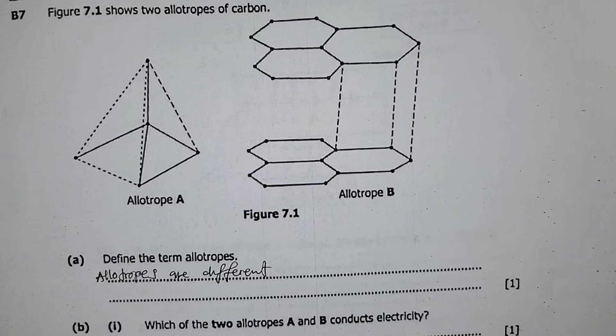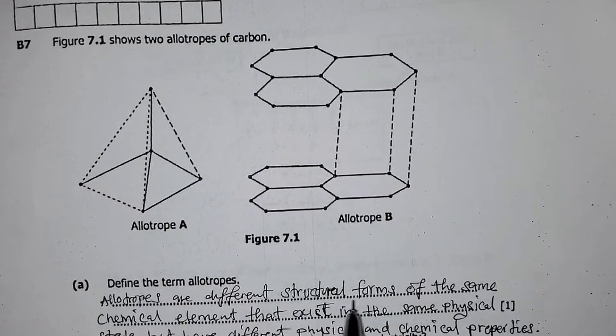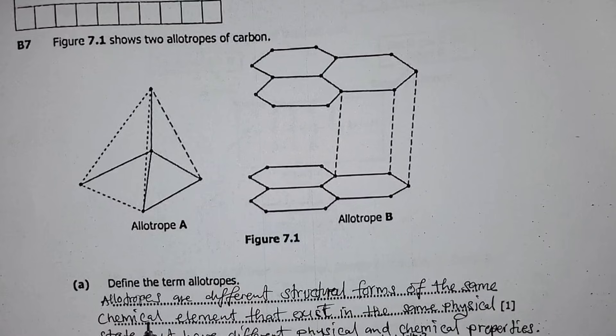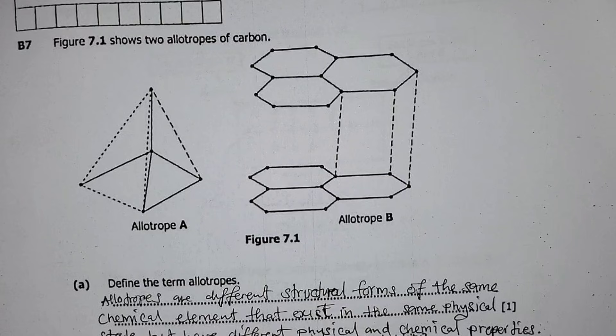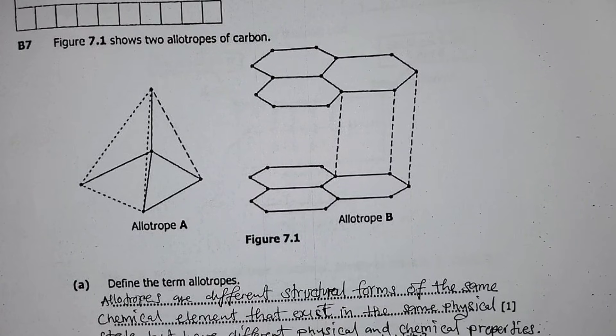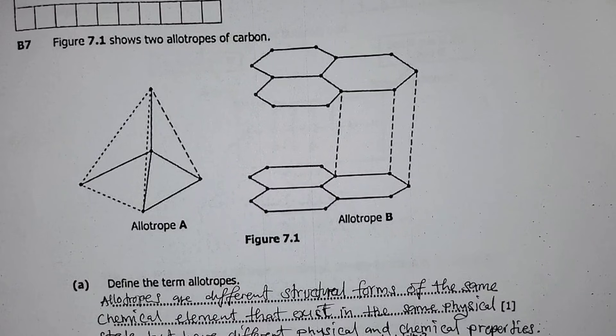and chemical properties. All right, so different structural forms of the same chemical element that exist in the same physical state but have different physical and chemical properties. Okay, so these are allotropes.